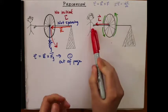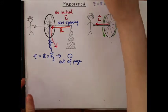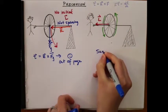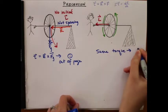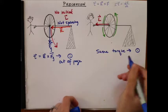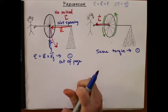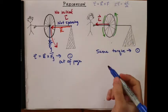Now when I let go of the wheel, I'm going to have the exact same torque as I did in this case. So same torque out of the page. So now the torque is going to cause a change in the initial angular momentum.